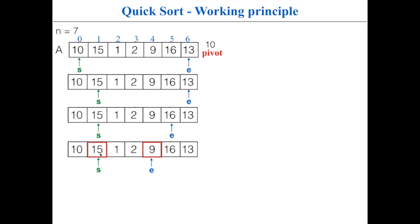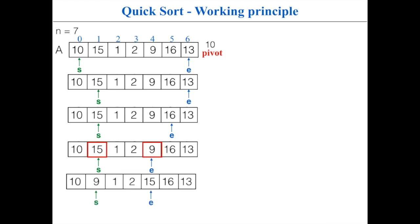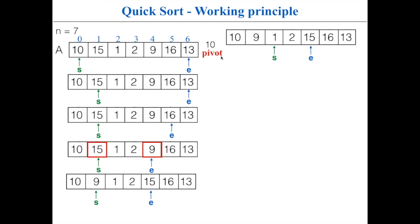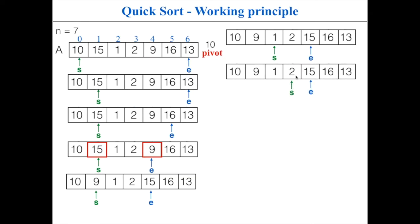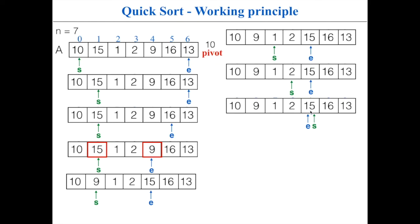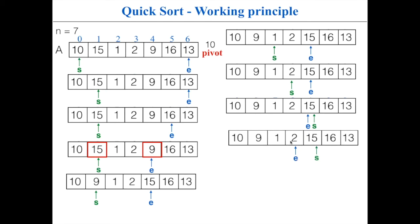Since both iterators stopped and haven't crossed, swap the two elements they point to. Now apply the same logic again: 9 is less than the pivot so increment start; 1 is less than the pivot so increment start; 2 is less than the pivot so increment start. Now start points to 15, which is greater than 10, so we stop. The end iterator is also pointing to 15, which is greater than the pivot so decrement end. Now 2 is less than the pivot so we stop end.